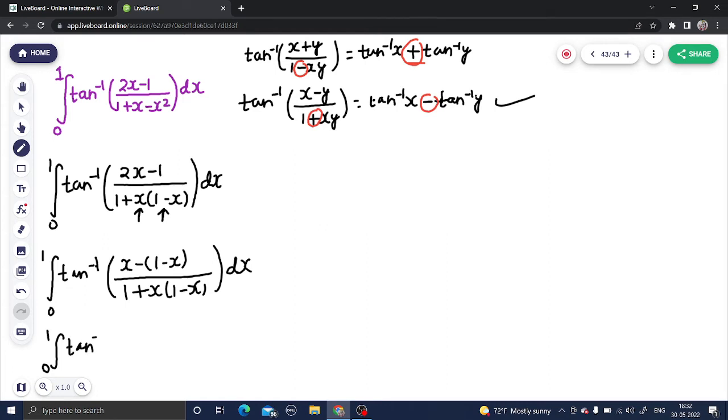We can rewrite this as 0 to 1 tan inverse of first minus tan inverse of second which is 1 minus x dx. Now we can do one thing, we can separate this into two integrals. The first integral will be 0 to 1 tan inverse of x dx. And the second integral will be 0 to 1 again tan inverse of 1 minus x dx.